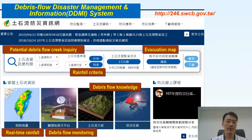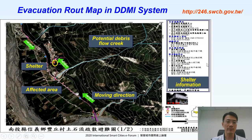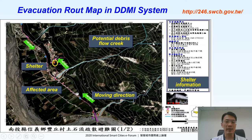This slide shows the front page of our external system. The public can easily inquire about the potential debris flow creeks, the rainfall criteria of their village, and the evacuation map they are going to use during an emergency. They can also search for debris flow knowledge, debris flow monitoring information, and real-time rainfall information. From the external website, people can easily search for evacuation route maps and find the potential debris flow creek locations and shelter information.